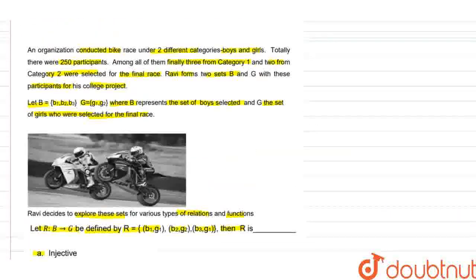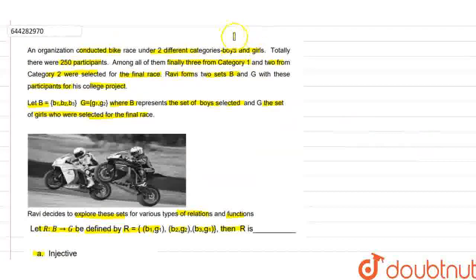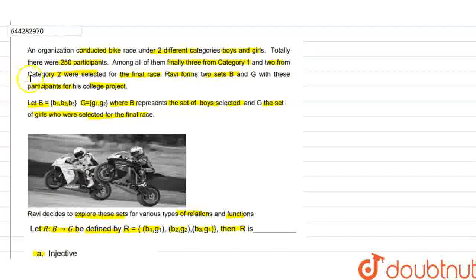We have given that the organization conducted a race with two different categories: boys and girls. There were 250 participants, and from Category 1, three boys were selected for the final round. So B = {b1, b2, b3}. These are the boys selected for the final round. And we have another set G = {g1, g2}. These are the girls selected for the final round.